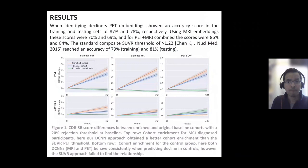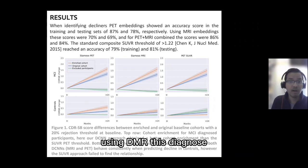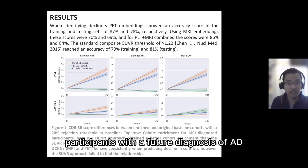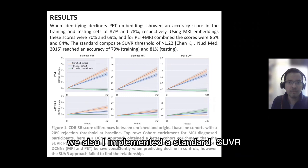Results from the CNNs trained with PET and MR images showed that for the PET images, the accuracy for identifying participants with a future diagnosis of AD was 78%. Using the MR images, classification accuracy was 69%. Combining the output of both CNNs, the accuracy for identifying participants with a future diagnosis of AD increased to 84%. For comparison, we also implemented a standard SUVR score for the PET images, which reached an accuracy of 81%.